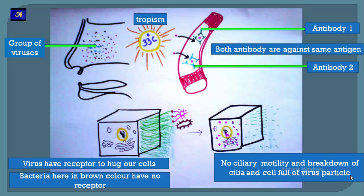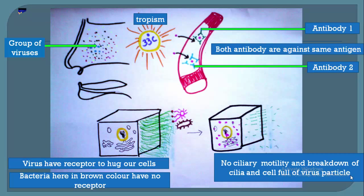As mentioned before, cilia move the mucus, but the cilia can also serve as an entry point for viruses because there may be receptors on them. These receptors on our cells are able to bind, or 'hug,' the virus. The bacteria represented here in brown have no such receptors, so bacteria don't have entry points through cilia. The virus enters the cell and changes its morphology. Finally, the cilia become disintegrated due to viral action, and with no more barrier, the cell becomes a factory of virus particles.